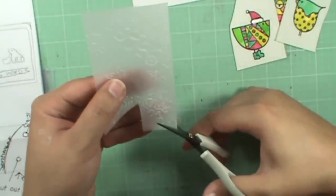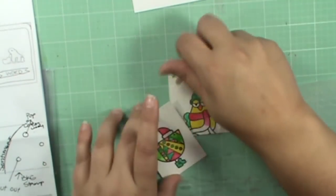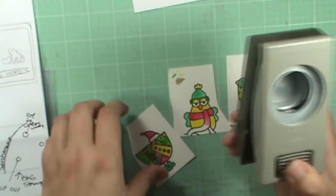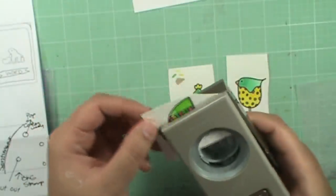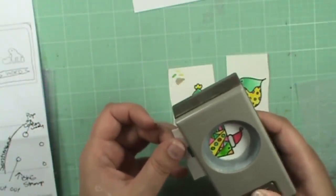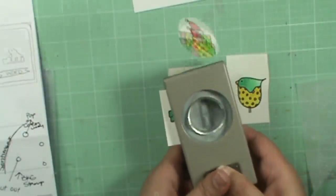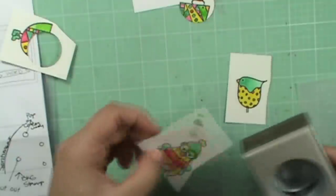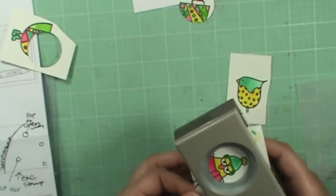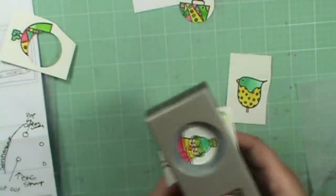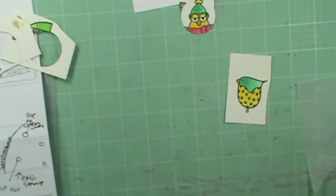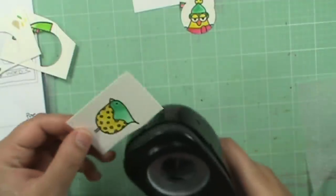Now my three images are done drying. I have this one and three eighths inch punch from Stampin' Up and I'm going to use this and go in here and grab this little image and punch it out. Same with this little guy here, and then this one I'm going to use the one and a quarter inch.